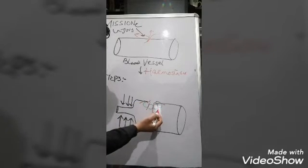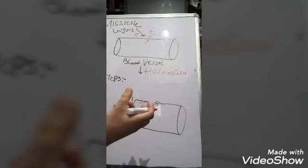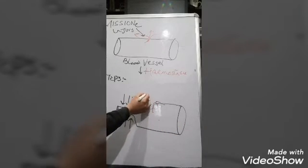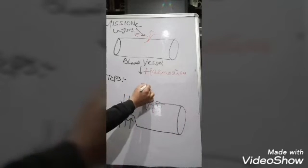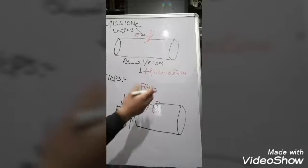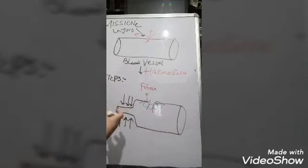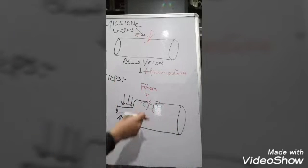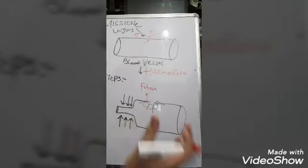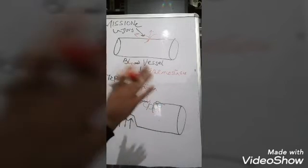Once the platelet plug forms a wall, a cementing agent arrives which solidifies and strengthens it. That cementing agent which strengthens the platelet plug we call fibrin. This fibrin strengthens the wall formed at the injury site.